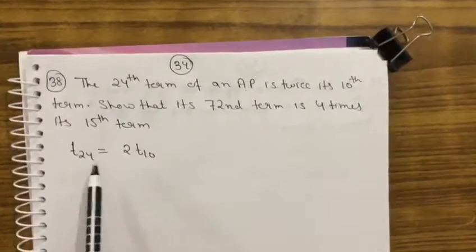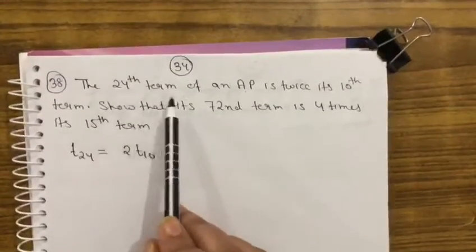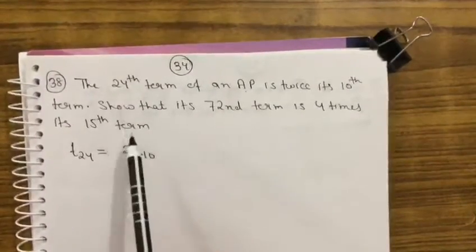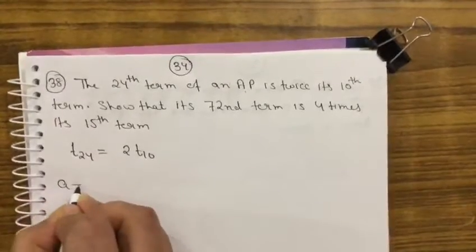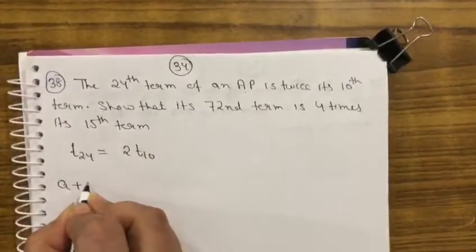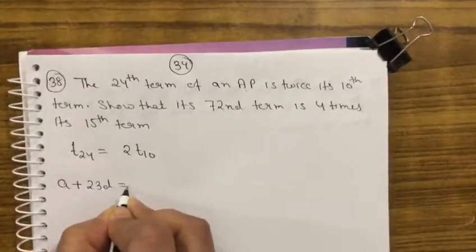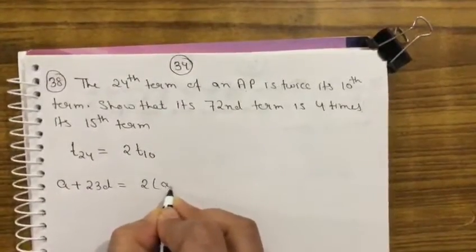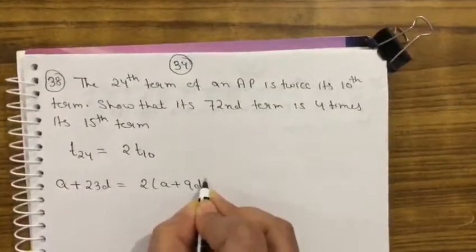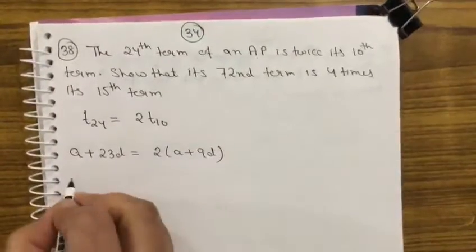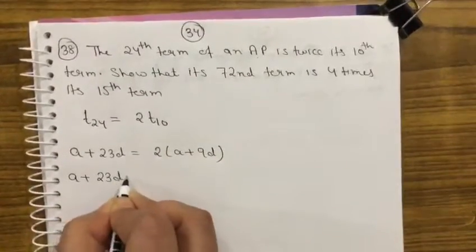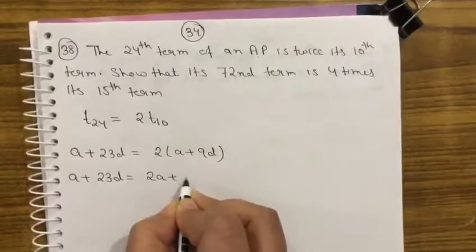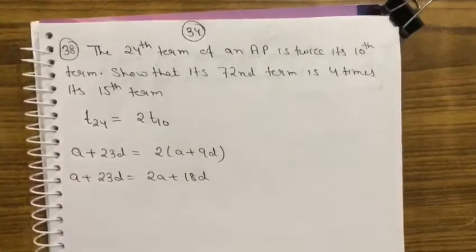The 24th term of an AP is twice its 10th term. What is this? A plus 23d equals 2 times a plus 9d. A plus 23d equals 2a plus 18d.